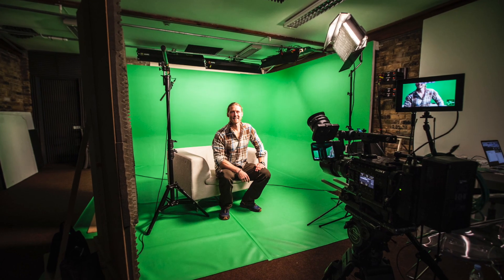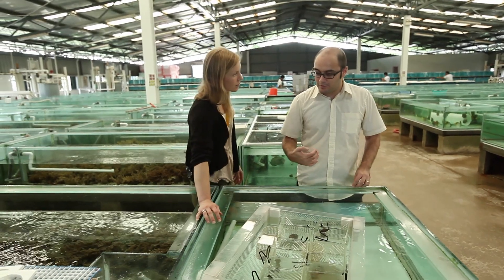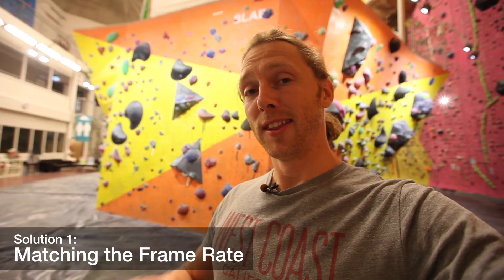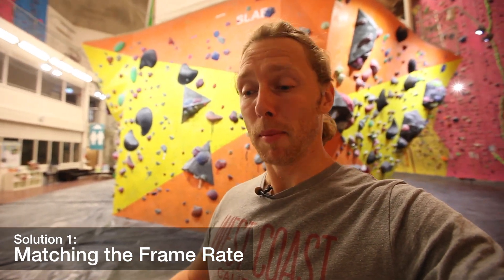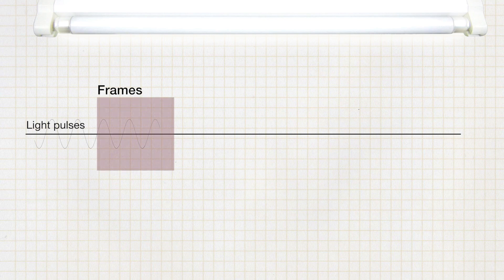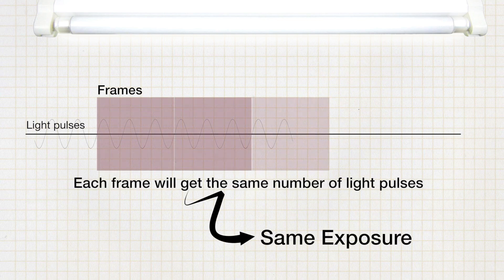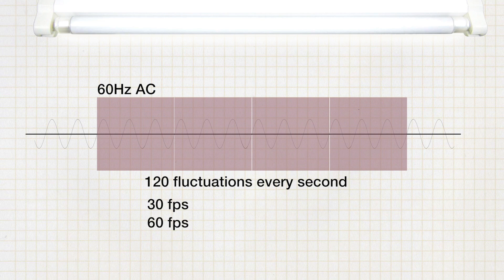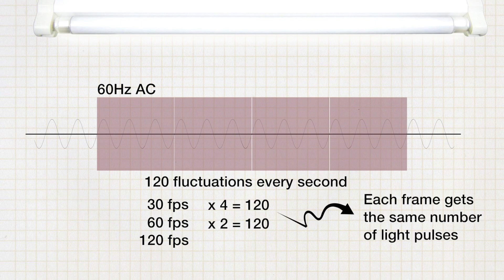For studio shots we can get around this by using flicker-free lights operating at really high frequencies, but for what we do most of the time this is not an option. We have a couple of other solutions, and the first one is setting the frame rate so it's a divisor of the fluorescent light fluctuation rate. For example, if you're shooting in the US and the fluctuation rate is 120, then shooting at 30, 60, or 120 frames per second should be fine — because 30 times 4 is 120, and 60 times 2 is 120.